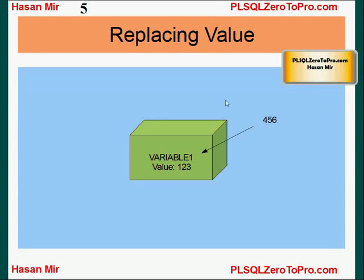And you can replace the value as well by putting another value in the variable. Just keep one thing in mind: a variable can only store one value at a time. So if you're putting some other value in the variable, the previous value would be thrown out. Just imagine a variable as a box which can only include one item in it at a time. So the new value goes in, the previous value is thrown out.